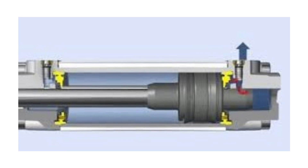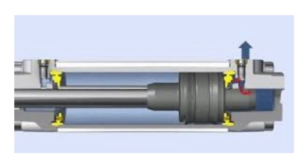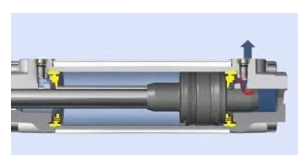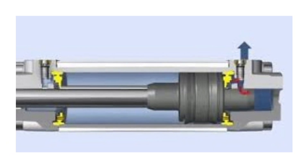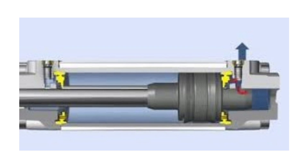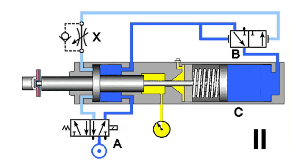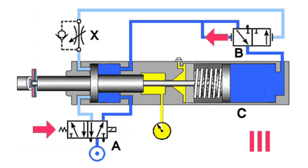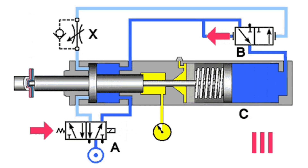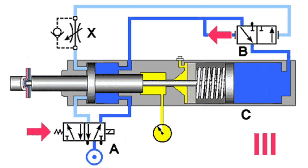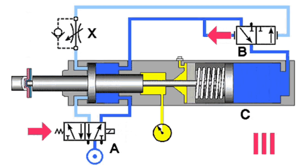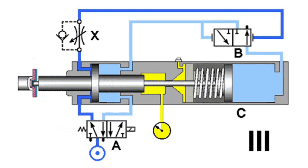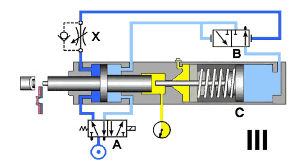Pneumatic actuators have several different names, including pneumatic cylinders, air cylinders, and air actuators. Each of these terms is synonymous with the other, as they all identify the device as air pressure based. Another name for an air cylinder is pneumatic ram, in which the ram is referring to the linear piston.